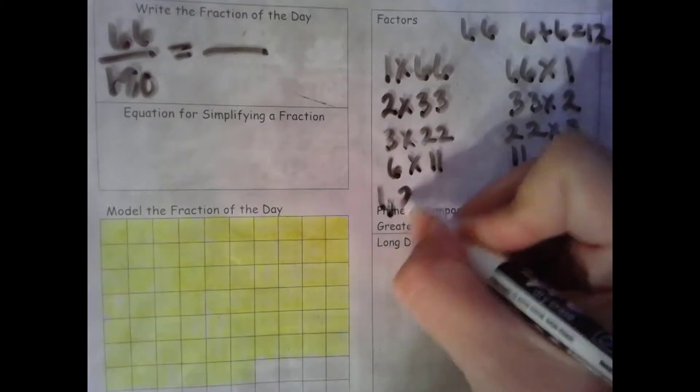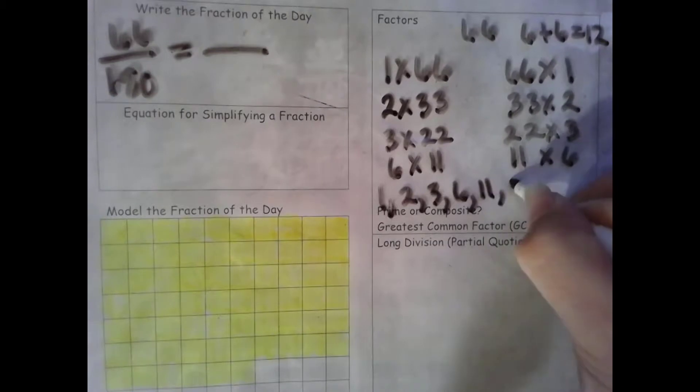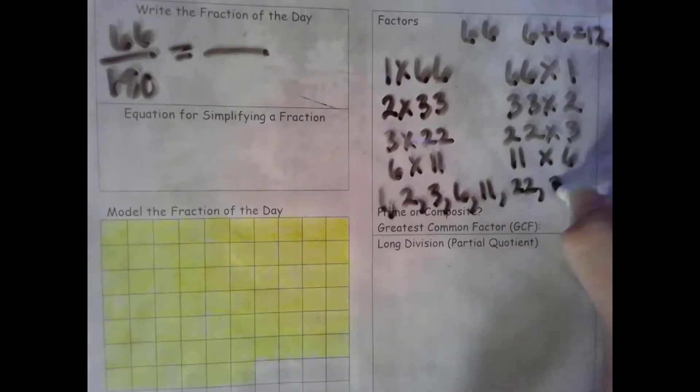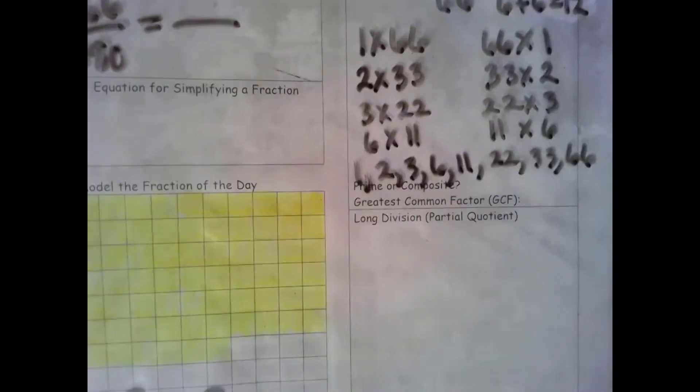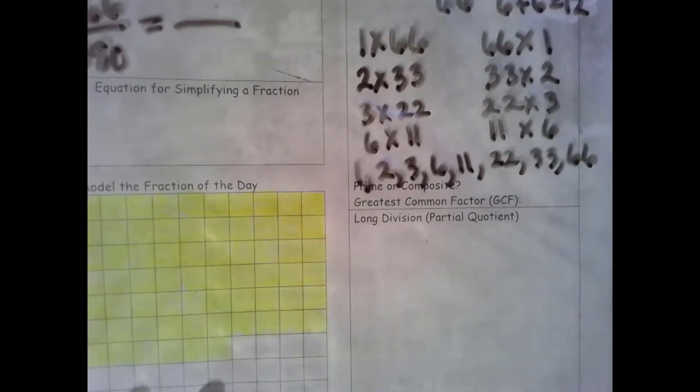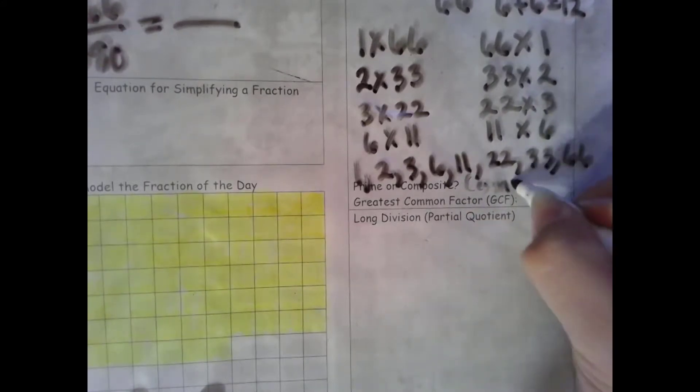So let's go ahead and list them from least to greatest. 1, 2, 3, 6, 11, 22, 33, 66. So we have 8 factors, that is more than 2 factors. It is composite.